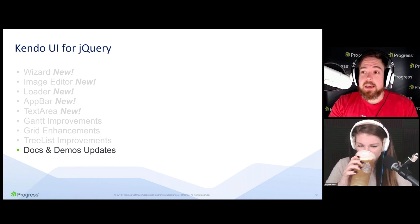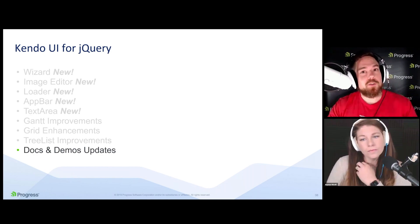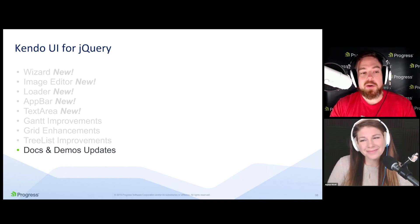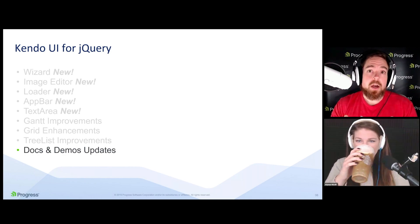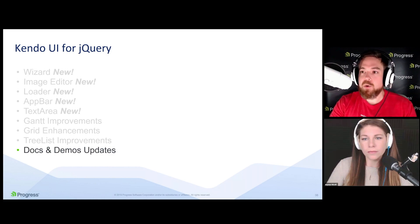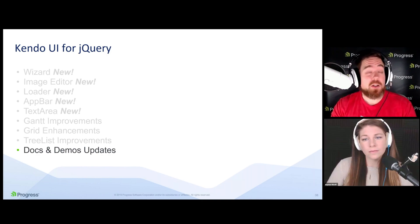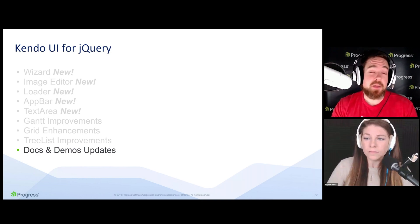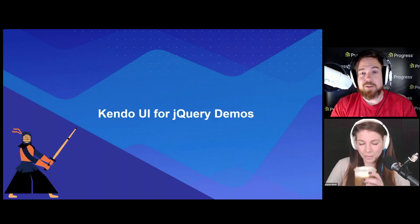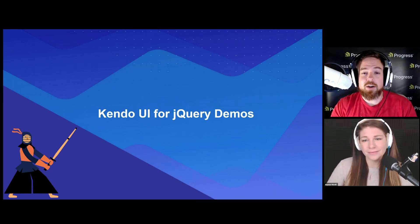Last but not least, we've given the demos a facelift and tweaked things under the hood. The docs and demos for Kendo UI for jQuery are a lot faster to load — in some cases we've seen an increase of 400% in performance, so they're 4x faster. That really adds up as you navigate through the demos, and we hope to save you some development time as well as time when using our resources.